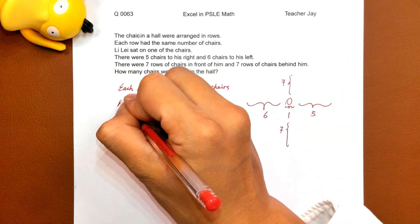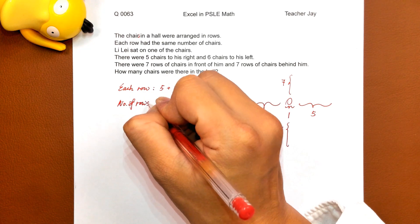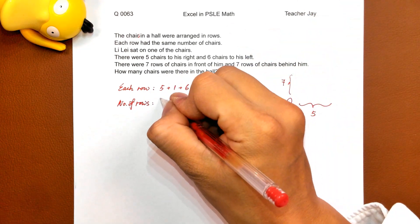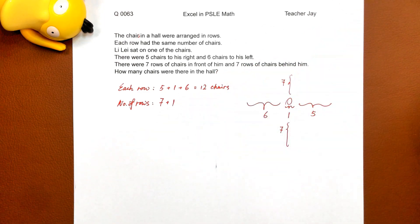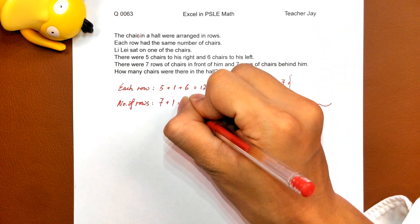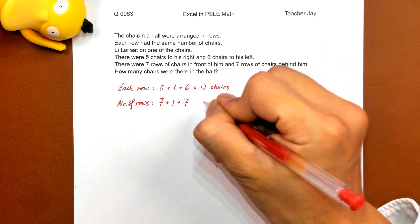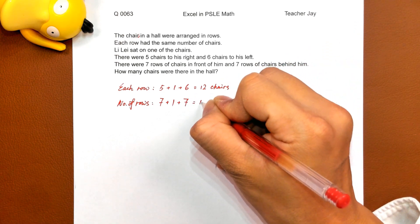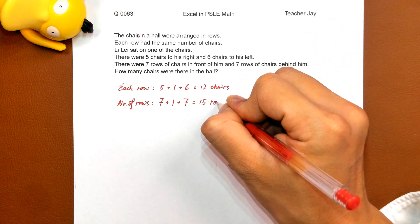And number of rows in the hall: seven in front, one where Li-lei was sitting, and seven behind him. So the total number of rows is fifteen.